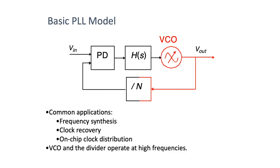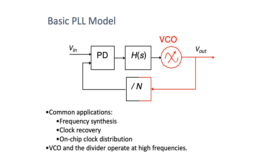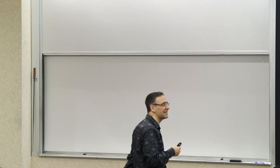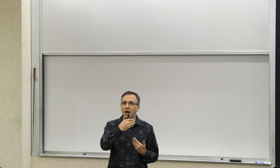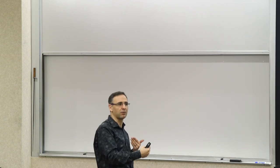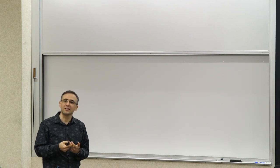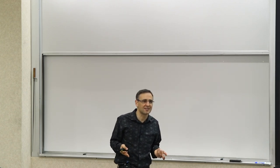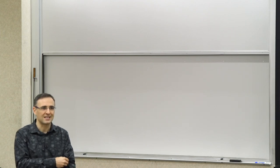If you add a frequency divider in the feedback path, the inputs of the phase detector must still be in phase and at the same frequency. This means the output has to be at N times the frequency, so after division it gets to the right frequency. This takes an input signal and multiplies it up by a factor of N — it becomes a frequency multiplier. This is another example of functions appearing in the feedback path getting inverted: frequency division in the feedback path means the closed-loop system operates as a frequency multiplier.